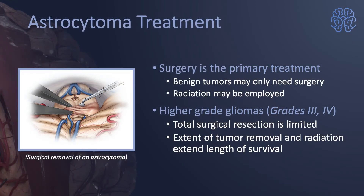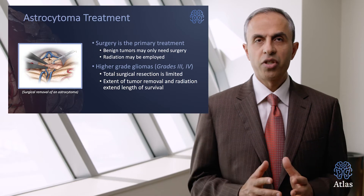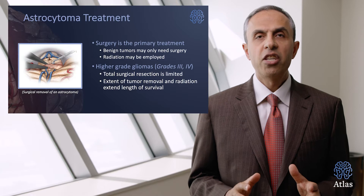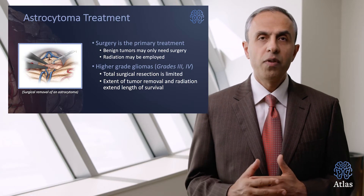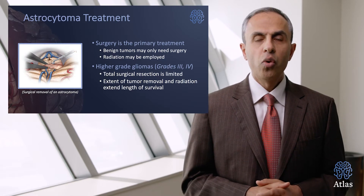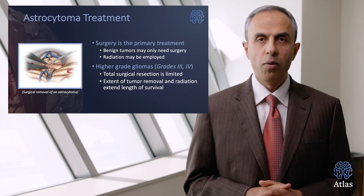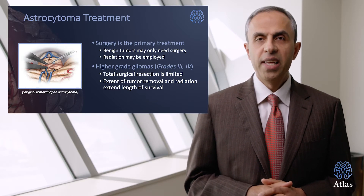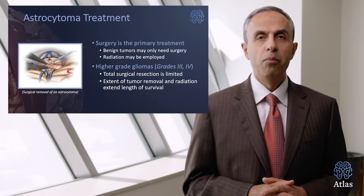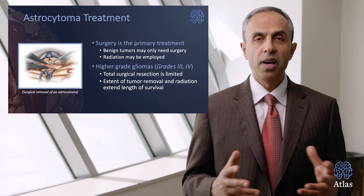What are the treatments for astrocytomas? Just like other gliomas, surgery is the primary treatment — the more of the tumor that can be removed effectively, the better. Benign grade 1 or grade 2 tumors may only need surgery. Radiation may be employed if the tumor is not removed completely or cannot be removed at all. For higher-grade gliomas — grade 3 and 4 — total resection is limited because of the finger-like projections into the normal brain, and therefore radiation and chemotherapy are necessary to further enhance the patient's lifespan.